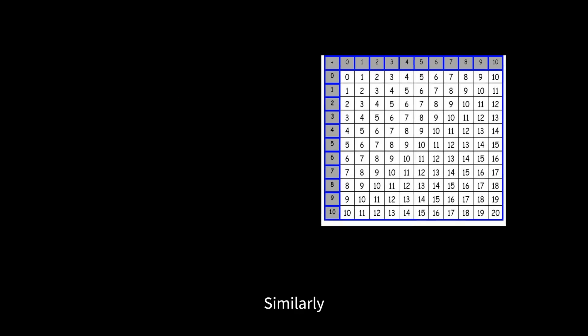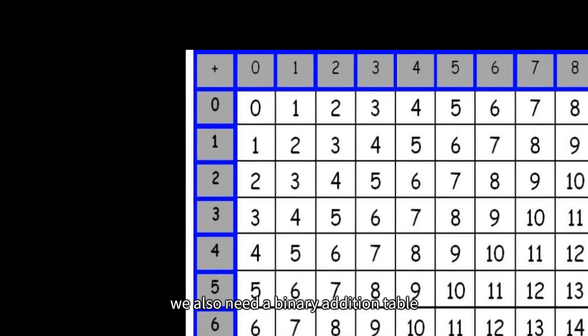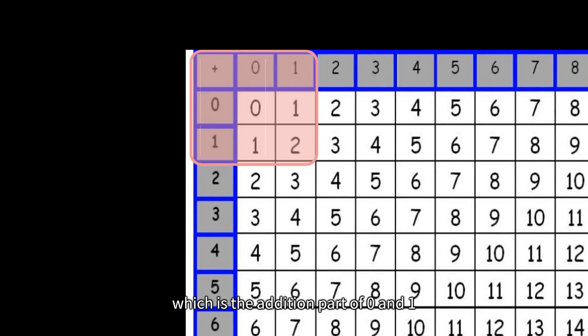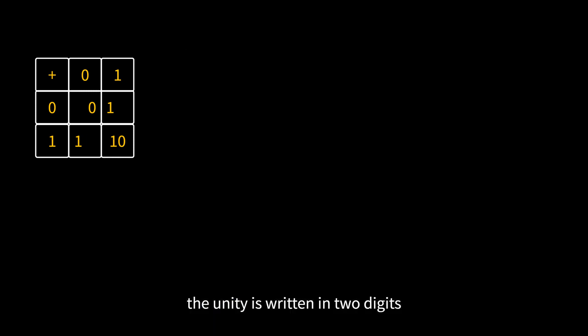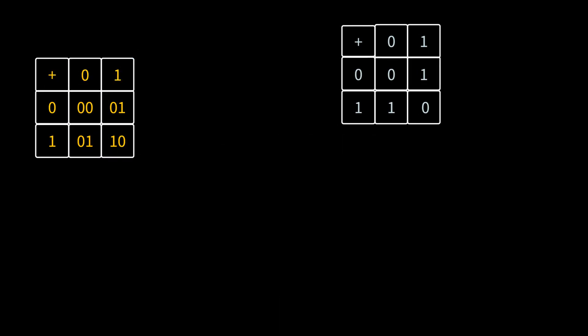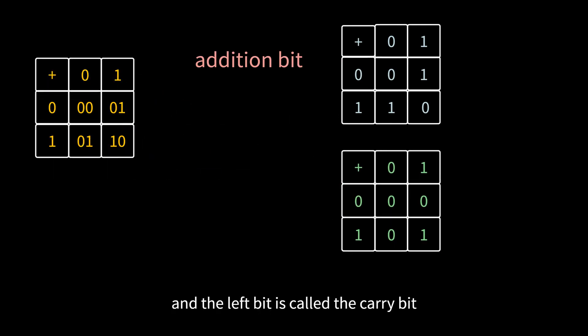What about the binary? Similarly, we also need a binary addition table, which is the addition part of 0 and 1, and then change the decimal 2 to the binary 10. Finally, the unity is written in two digits. Next, split the two bits. The right side is called the addition bit, and the left bit is called the carry bit.